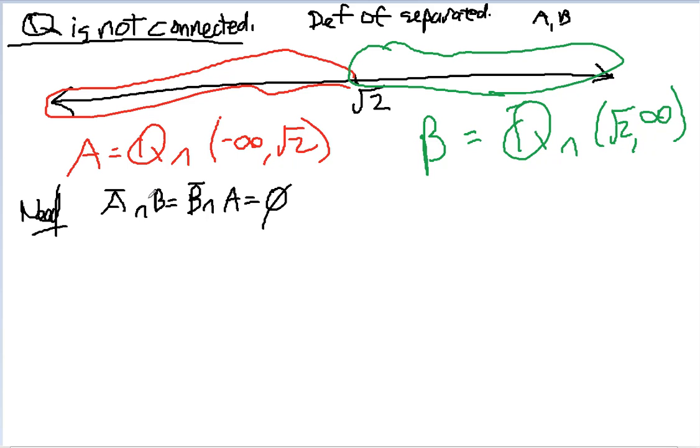Well, let's look and see what these limit points could be. A-bar, meaning A and its limit points. The biggest A could be is this entire interval negative infinity to square root of 2 because I'm intersecting with something with that.